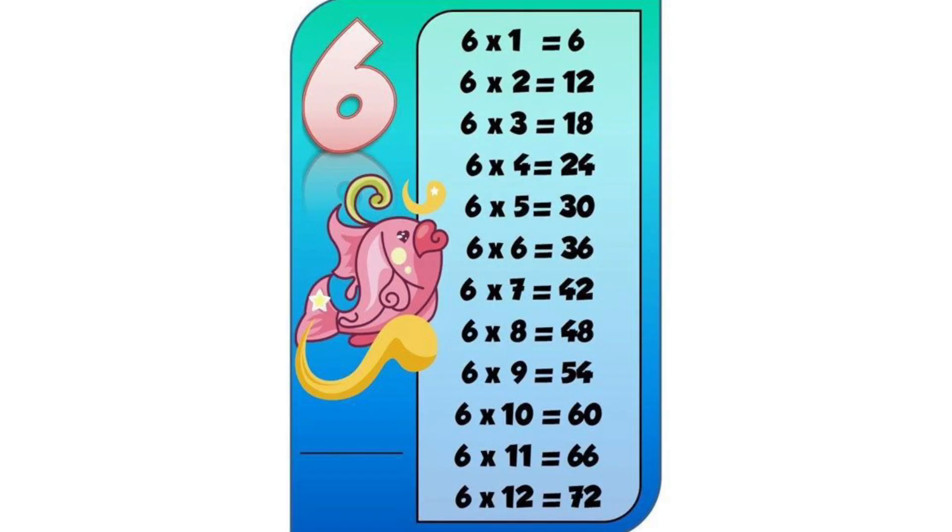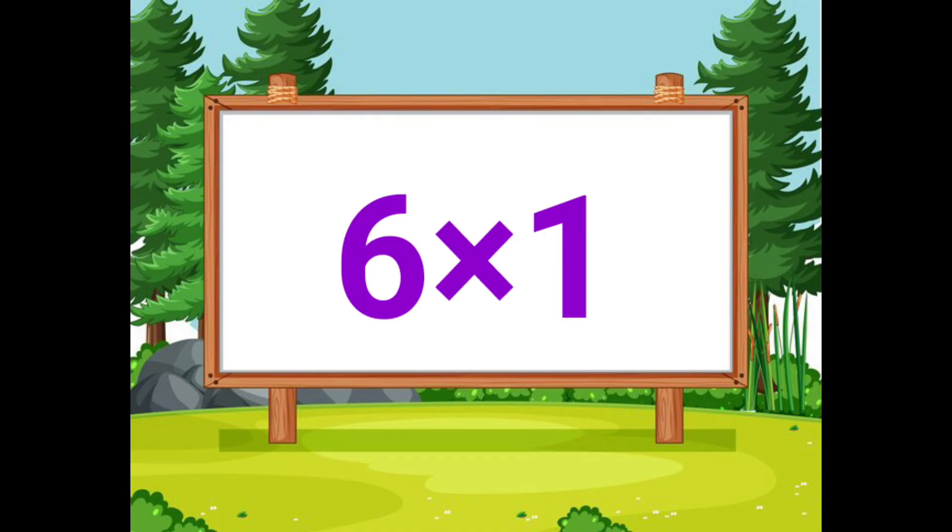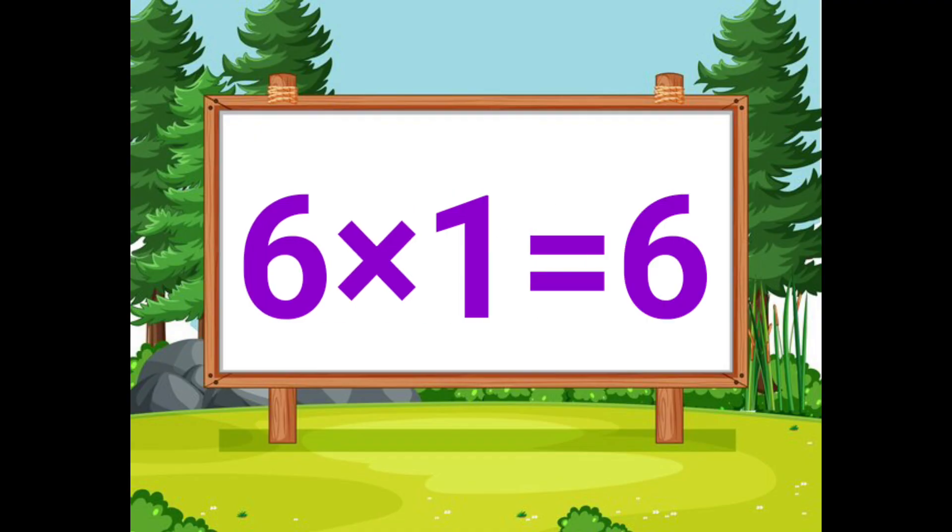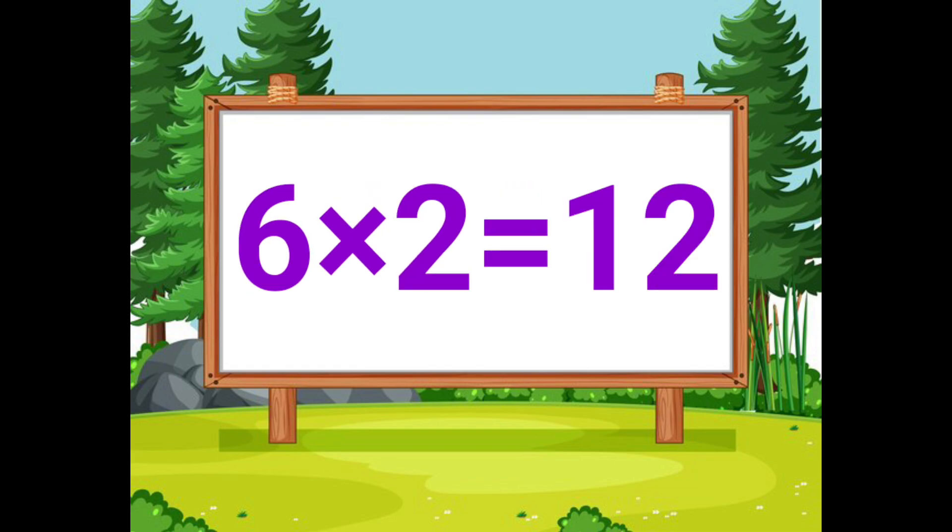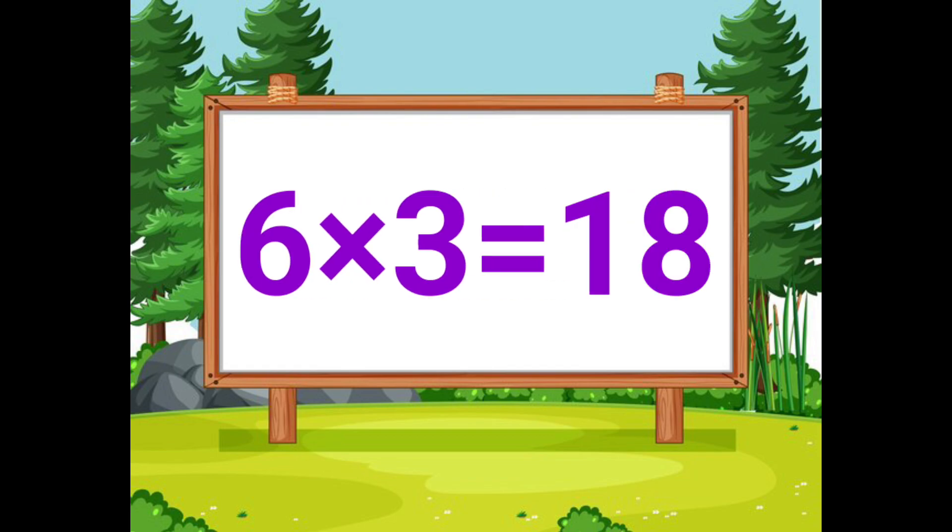First, we are going to see 6th table. 6 ones are 6. 6 twos are 12. 6 threes are 18.